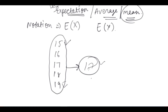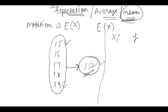So average or mean — this is nothing new because we have already seen this. If you remember, we have a table when we have x_i, and the formula is summation of f_i times x_i divided by summation of f_i.